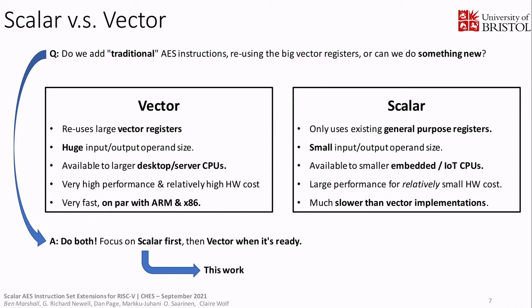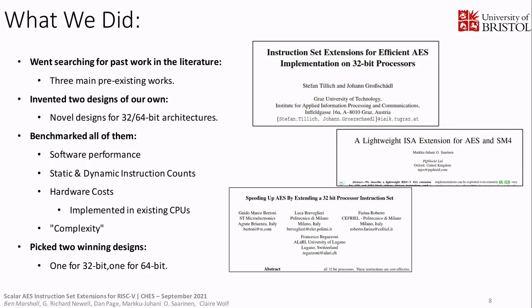In true RISC-V fashion, we actually decided to do both, but we're focusing on the scalar instructions first because they're ready, whereas the RISC-V vector extension is still being defined. What makes scalar different is that your input registers are maybe only 32-bit or 64-bit wide as opposed to 128 bits. This means your implementation will inevitably be a little bit slower, but it's going to be available to a much larger set of CPU types — which is really interesting from a RISC-V perspective because that's where it's currently most popular, in the embedded compute space.